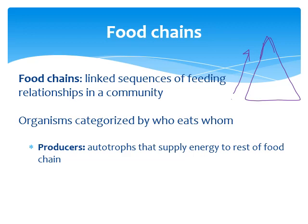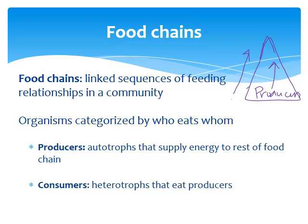Food chains are organized by who eats who. At the very bottom are our producers — the autotrophs — which can make their own energy and supply it all the way up to the rest of the food chain. Above the producers we have consumers, with different levels: primary, secondary, tertiary, quaternary, and so on. Producers are always at the bottom as photosynthesizers, and consumers are the heterotrophs that eat producers or other heterotrophs.